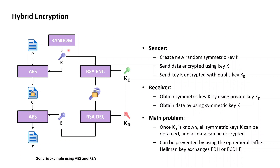Bob then uses this new random AES key K to encrypt his plaintext, which results in a ciphertext. Bob then takes the public key of Alice and encrypts the newly generated AES key K with RSA, which results in an encrypted key K. Bob then sends both the ciphertext together with the encrypted key K to Alice, who in a first step takes her private RSA decryption key and decrypts the received encrypted key K back into the symmetric AES key K that Bob freshly generated. Having recovered the symmetric AES key K, Alice can then recover the original plaintext by using this AES key to decrypt the received ciphertext back into the plaintext that Bob originally sent.